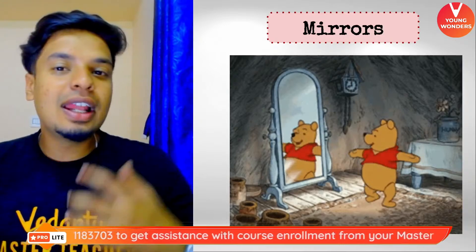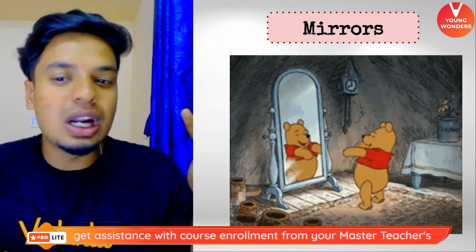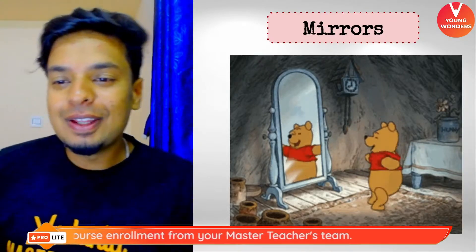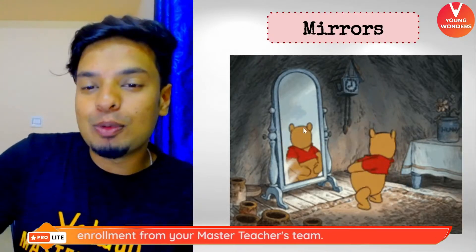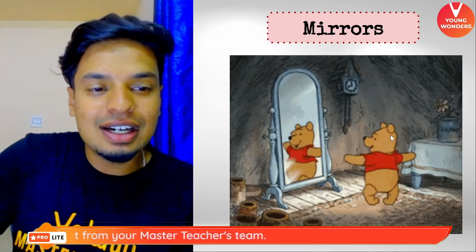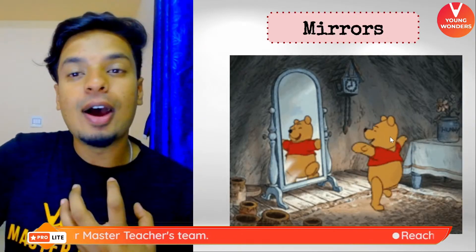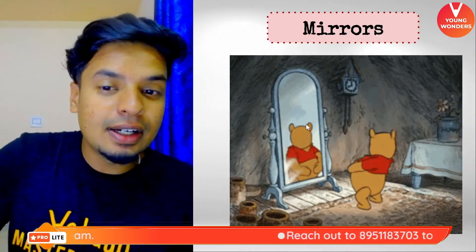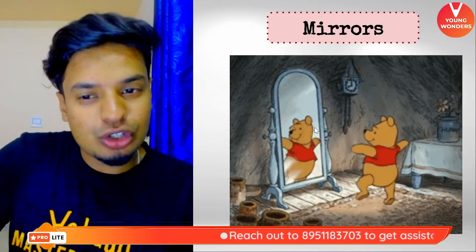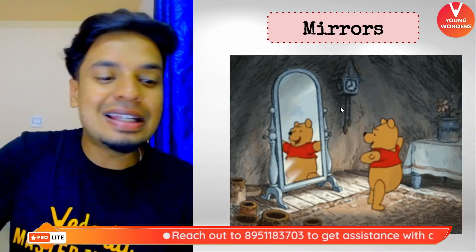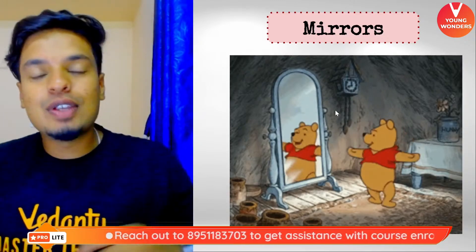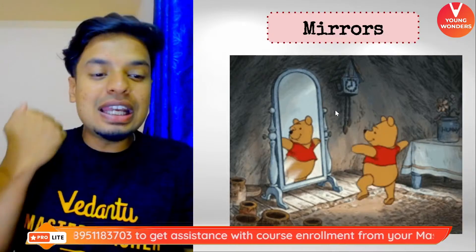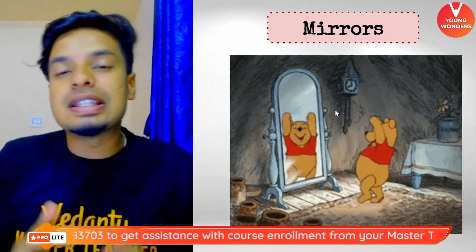Now there are a few things you need to understand. You can see Winnie the Pooh dancing here — the real Winnie the Pooh who is outside the mirror is the object. Whatever is seen in the mirror is the image. So when you stand in front of the mirror, you are the object, and whatever you see in the mirror is the image.